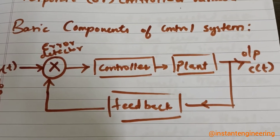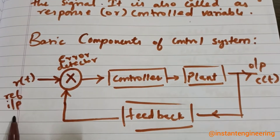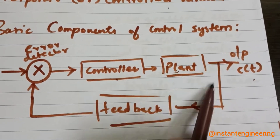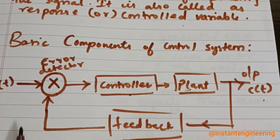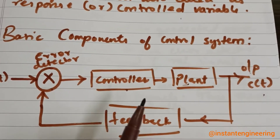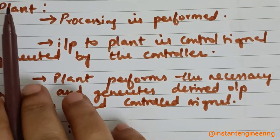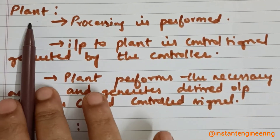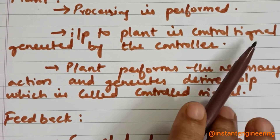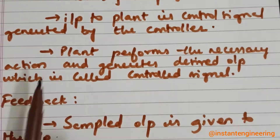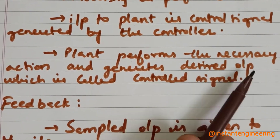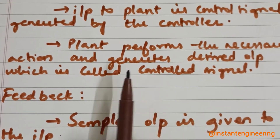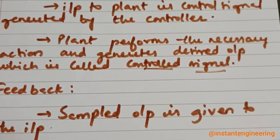The basic components required in a control system are shown in this diagram, which you need to remember. R(s) is the reference input, given to an error detector, then to a controller, then to the plant, which gives the output. This output is fed back to the error detector. The plant is where the process is performed — the conversion of input signal to output signal happens in the plant.